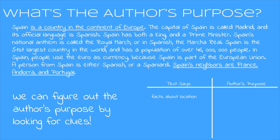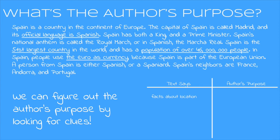Let's look for the next clue. The capital of Spain is called Madrid and its official language is Spanish. It's the 51st largest country and it has a population of over 46 million people. It also uses the euro as currency. These are all facts about what Spain is like, so the author is giving us all this information to help us understand what Spain is like. We'll add that to our graphic organizer as well.